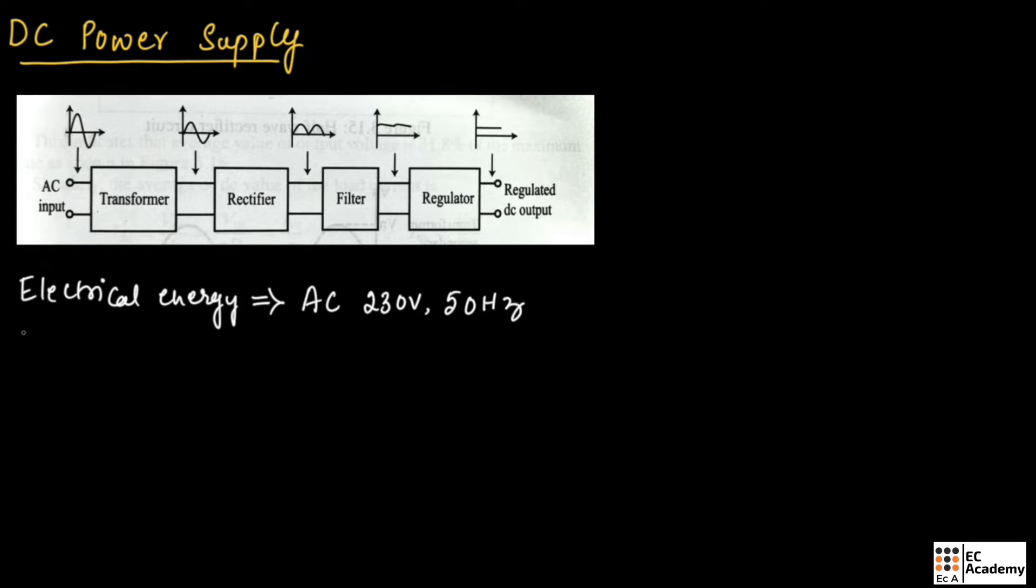But most electronic devices require DC power supply. This DC power supply will be in the range of 5 volts to 25 volts, so it is very essential for us to understand the DC power supply.